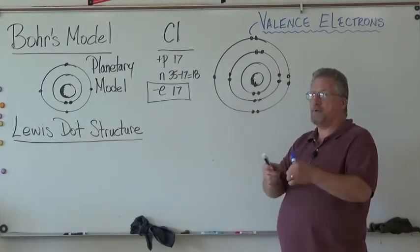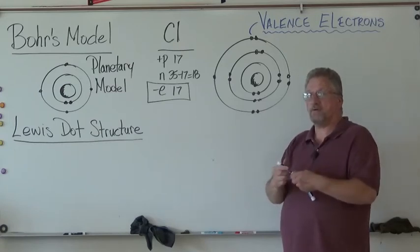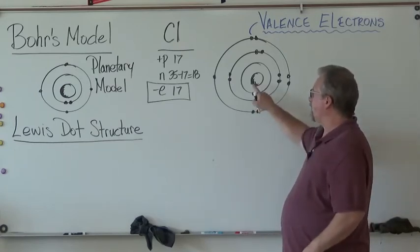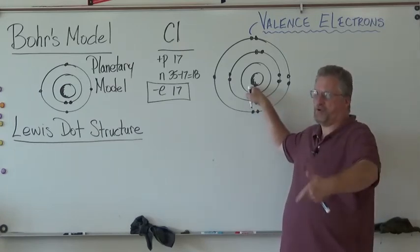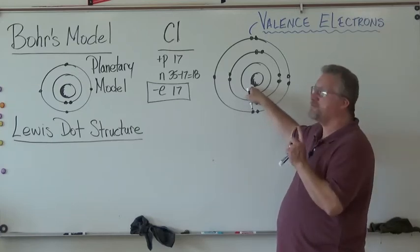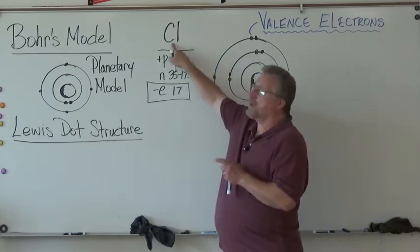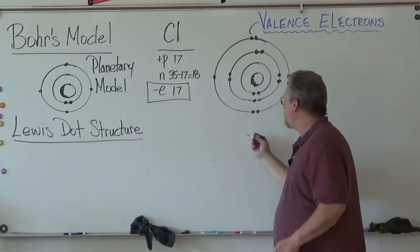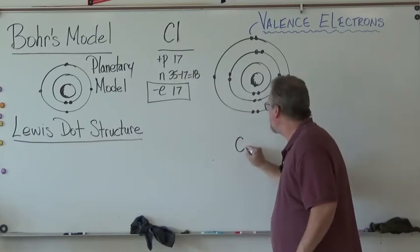So Lewis, his structure is very, very useful. He said, instead of drawing a nucleus in the center, he said, why don't we draw the chemical symbol, chlorine? So he puts a Cl right there.